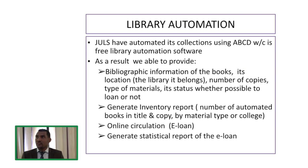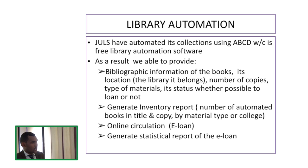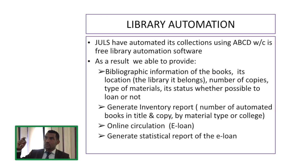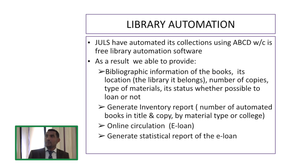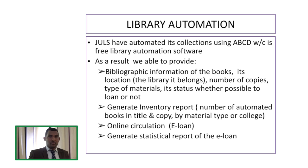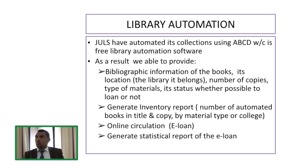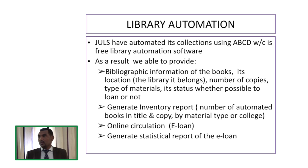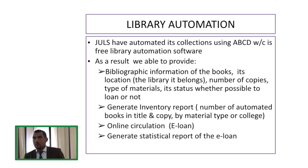As Jimma University Library System, we have implemented different library technologies. The first is library automation — we have automated all our library resources. As a result, users can access the bibliographic information of books: location, number of copies, type of materials, whether it is a stack book, reference book, or circulation book, and its availability status before coming to the library physically. We are also able to generate inventory reports by material type and by branch library.